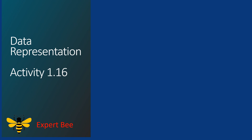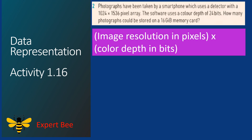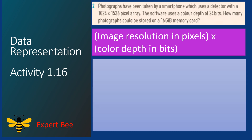Now we will solve Question 2. Photographs have been taken by a smartphone which uses a detector with a 1024 by 1536 pixel array. The software uses a color depth of 24 bits. How many photographs could be stored on a 16 GB memory card? We will use the formula: image resolution in pixels multiplied with color depth in bits. We multiply 1024 by 1536 to get the total pixels.